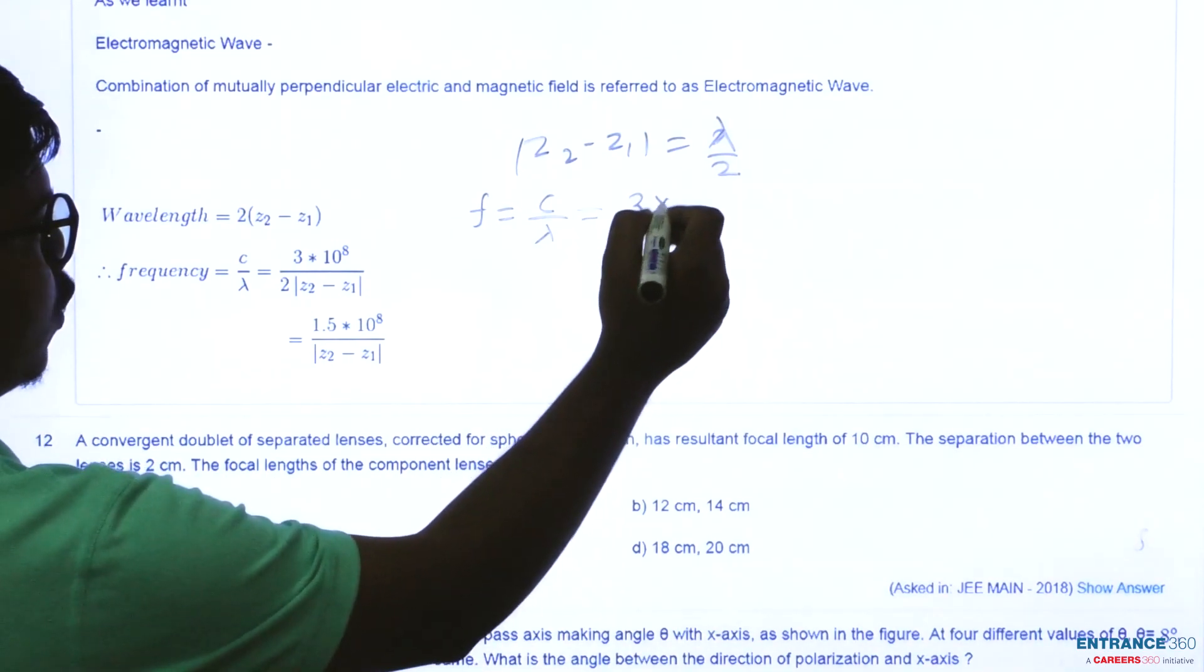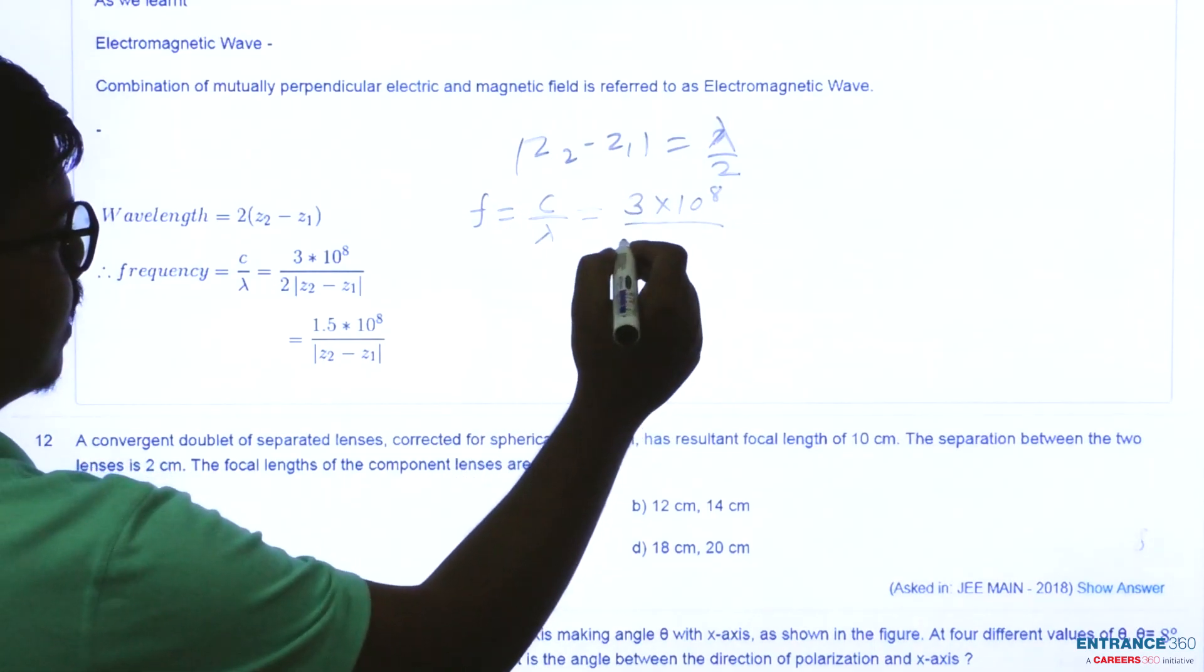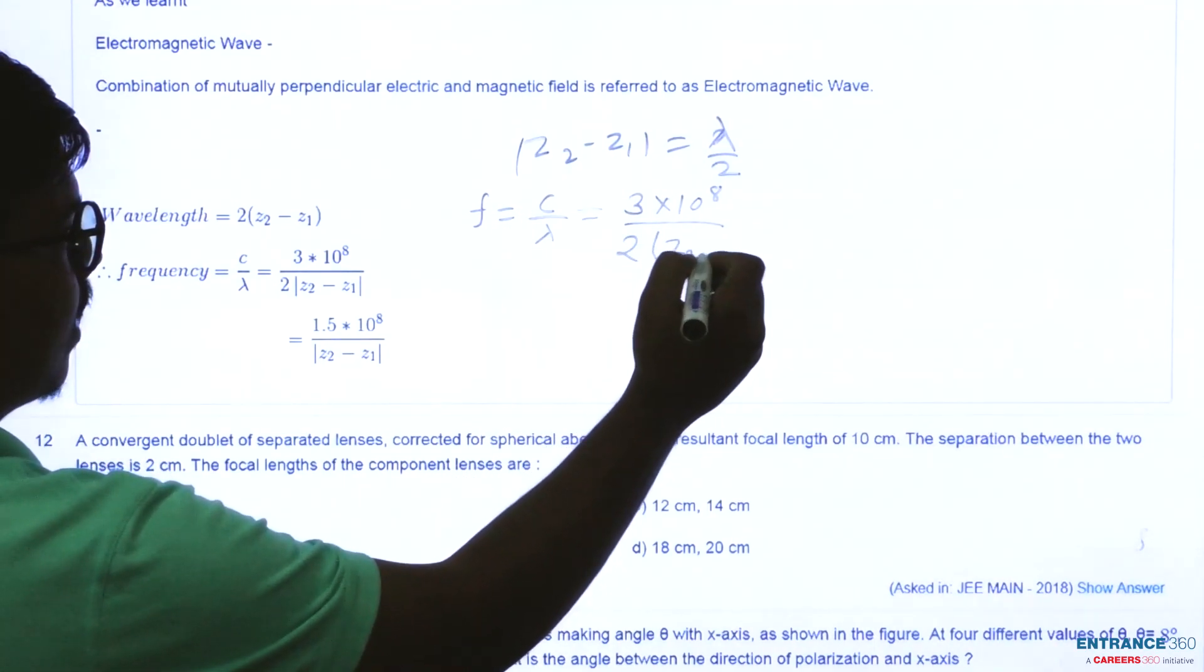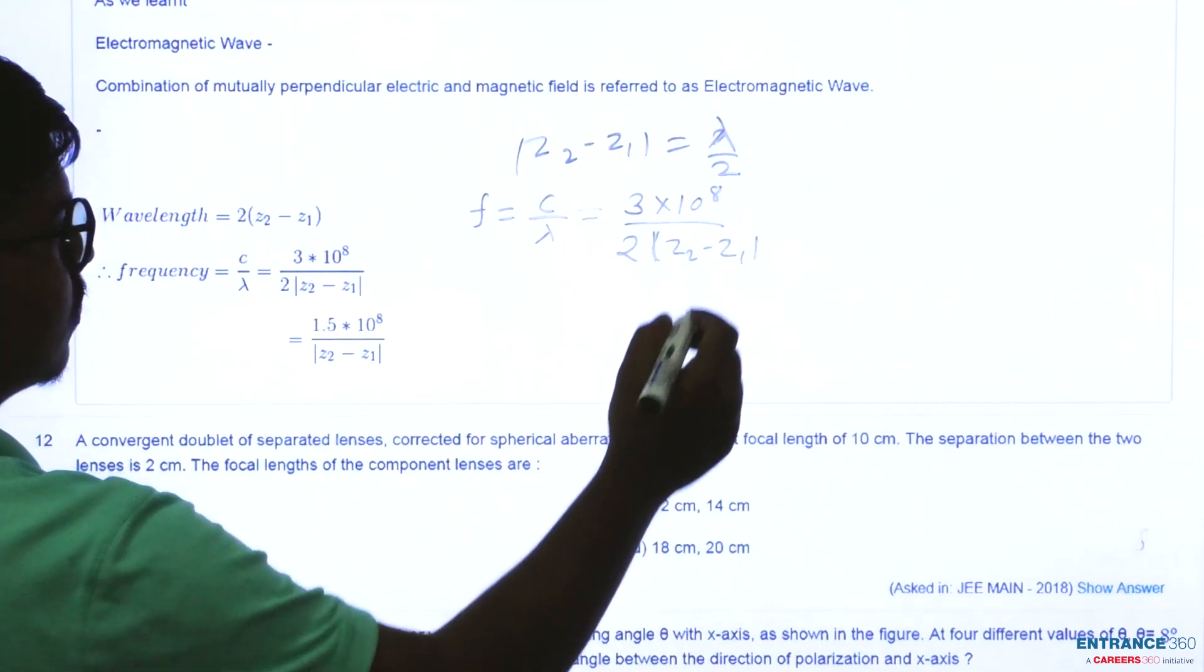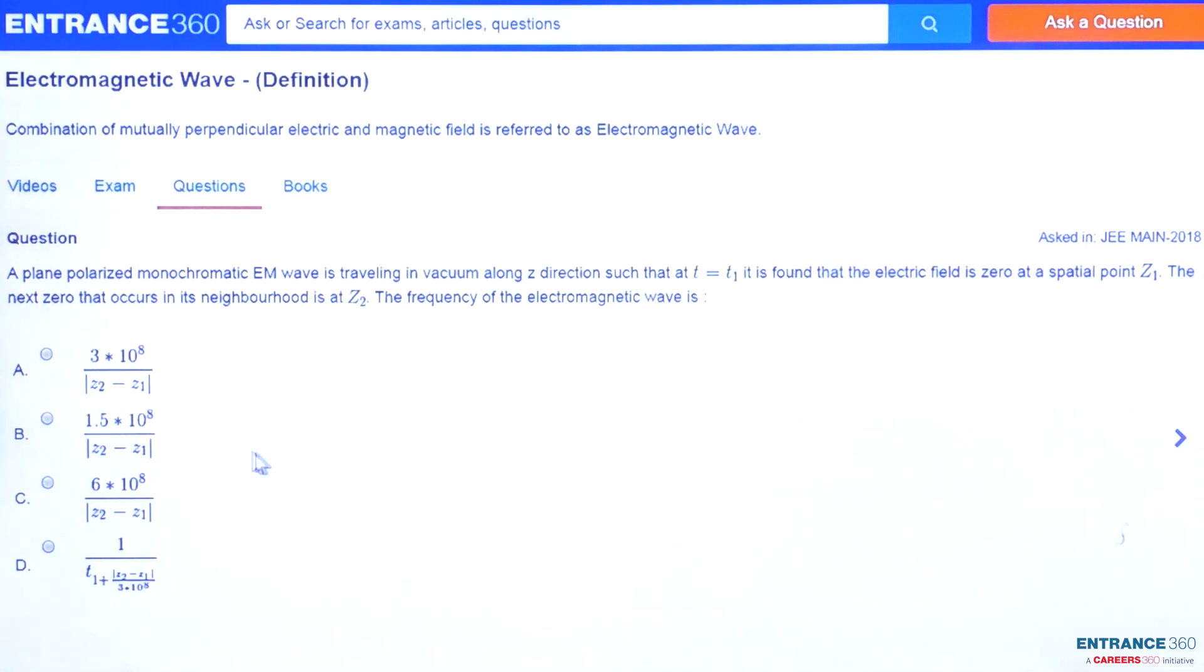And we know value of c as 3 into 10 to the power 8 and put the value of lambda from this that is 2 times z2 minus z1. So this is the value of frequency. So students, after solving we get our correct answer as option d which is correct.